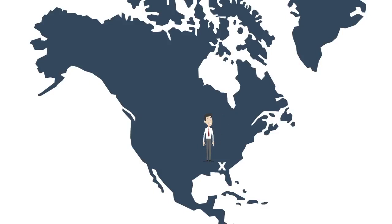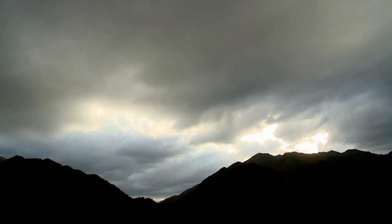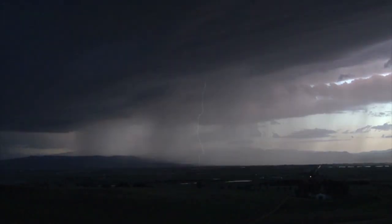I live in the southern United States. A typical day in the spring and summer may go like this: blue skies in the morning, clouds begin to build by lunch, and a thunderstorm may hit by early afternoon.